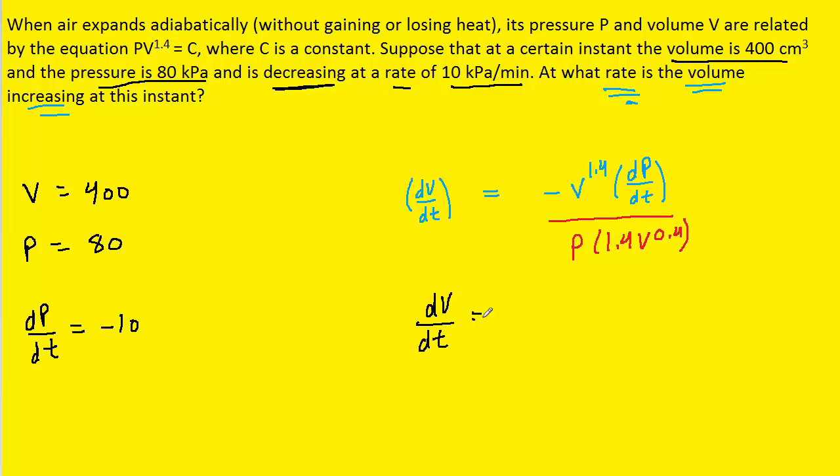So we have a negative sign here, and then the V is 400. That'll be raised to the 1.4. dP/dt, as noted, was negative 10. P was 80. And then once again, we have V being 400.